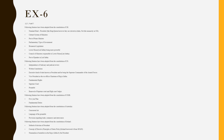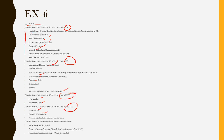The correct features borrowed are: from UK — Nominal Head (President), Post of Prime Minister, Cabinet System, Bicameral Legislature (Lower House and Upper House); from USA — Fundamental Rights, Supreme Court, Preamble, Judicial Review, Vice President as ex-officio head; from USSR — 5-year plans and Fundamental Duties; from Australia — Concurrent List, language of Preamble, provisions regarding commerce and trade; from Ireland — DPSP (Directive Principles of State Policy), method of election of President, and nomination of members of Rajya Sabha.